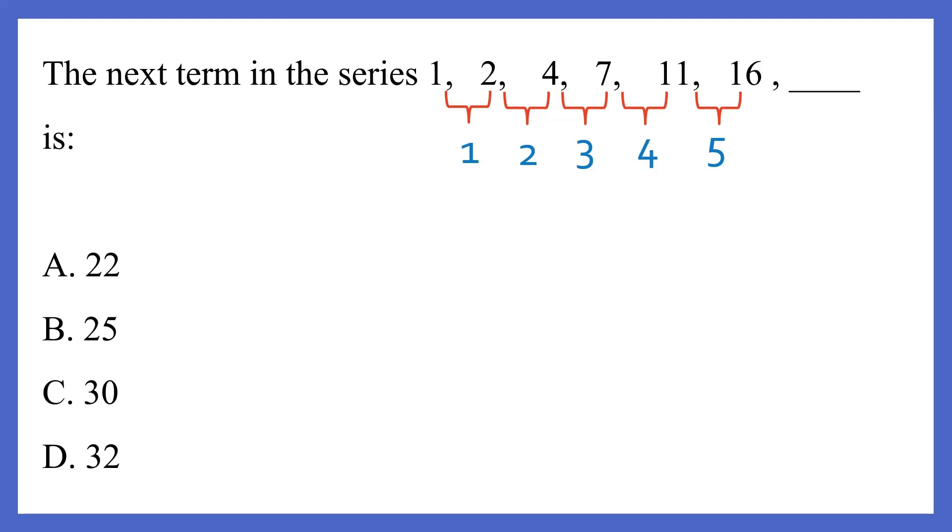So as you can see, the difference is going in this order: 1, 2, 3, 4, 5. Which means the next difference should be 6. So 16 plus 6 gives you 22. So the next term in the series is 22. So your answer is option A, 22.